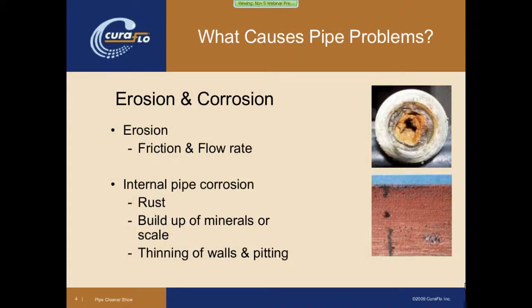So what causes these problems? There are two principal factors at play: one is erosion and one is corrosion. Corrosion is pretty much what everybody thinks of when they have pipe issues — pipes rusting and corroding, building up material. You can see this in the picture in the upper right, the galvanized pipe with severe tuberculation, which is rust bloom and mineral deposits built up. There's also pitting of the walls, especially in copper pipes.